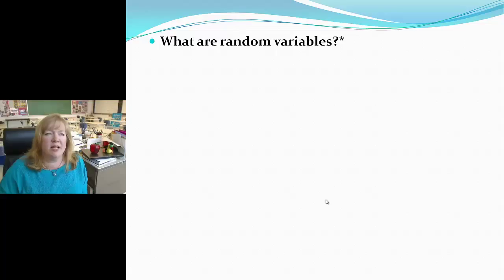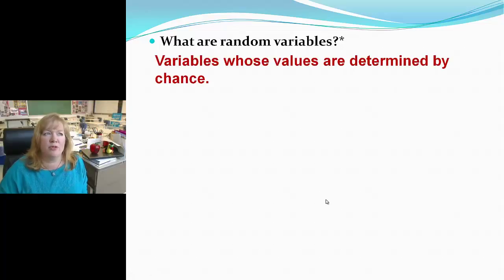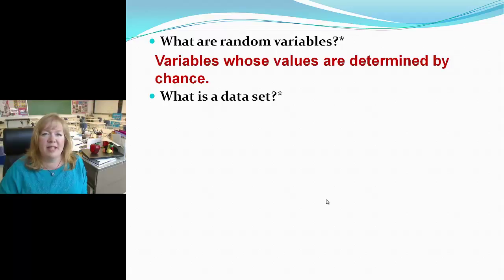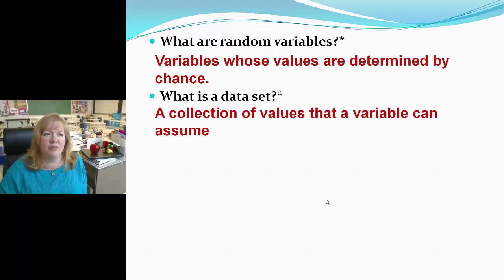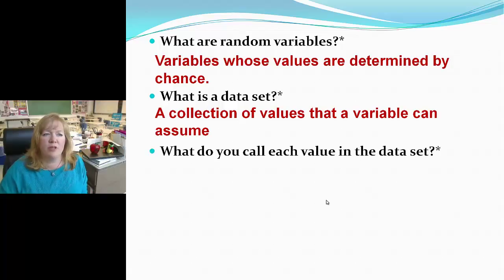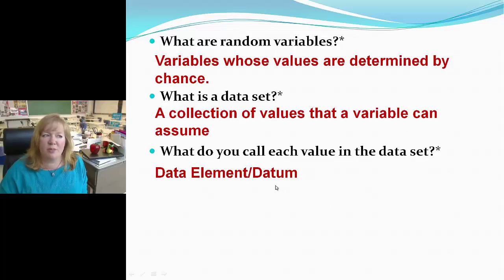What are random variables? Variables whose values are determined by chance. What is a data set? A collection of values that a variable can assume. What do you call each value in a data set? A data element or datum — the one word that represents a single value of a data set.